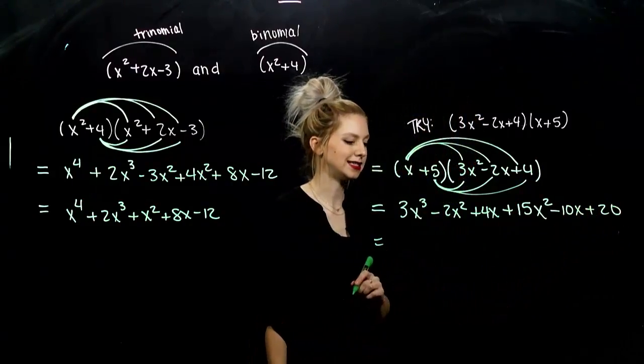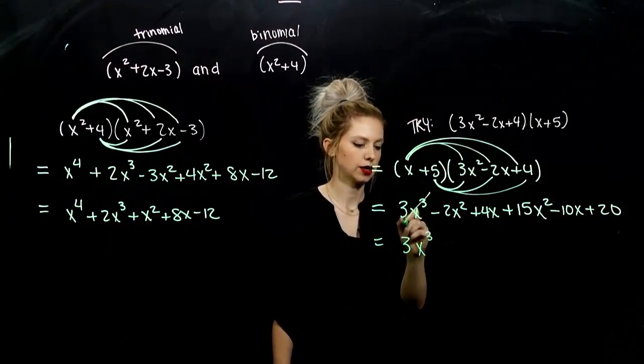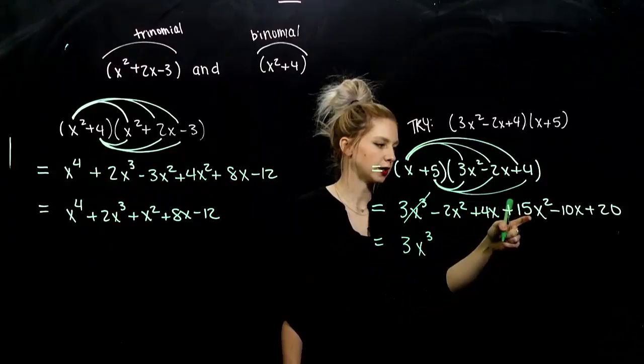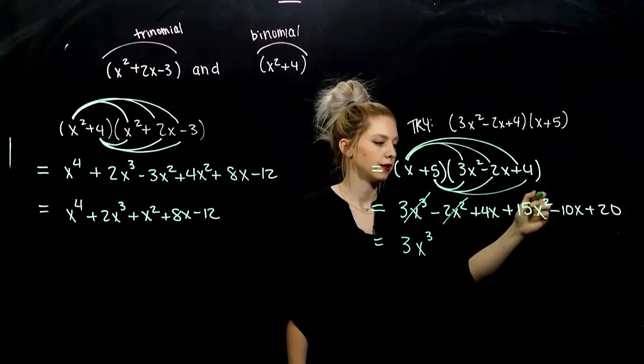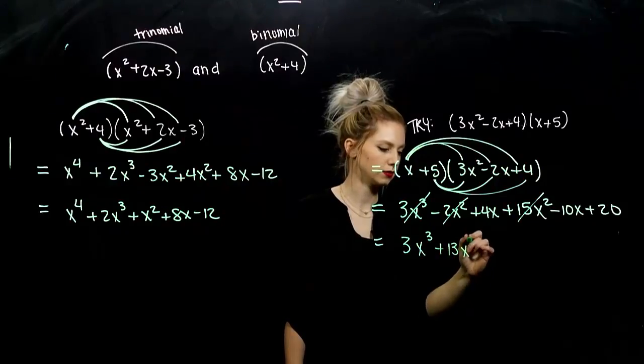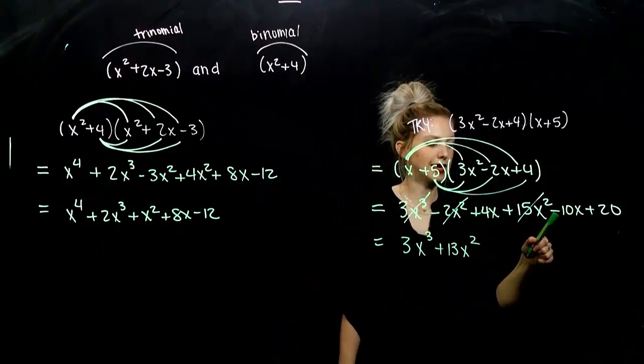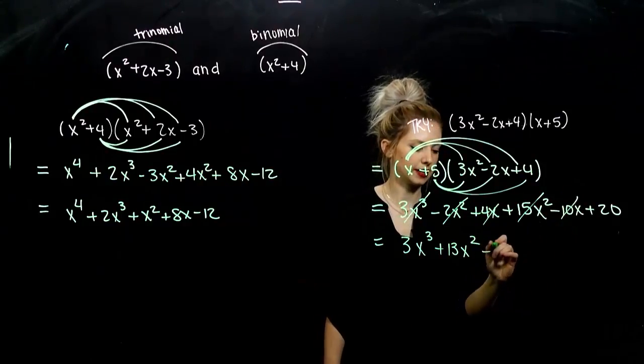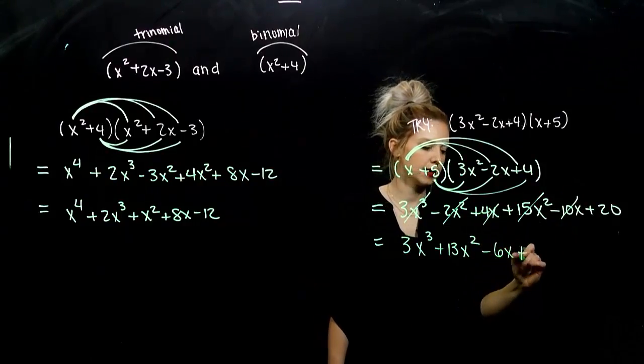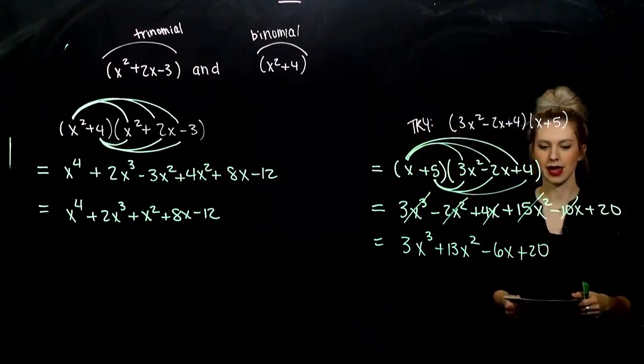We want to write in descending order. The largest thing I can see is 3x cubed. Take care of that one. How many factors of x squared am I going to have? I've got 15, and I'm taking away 2. So, I'll have 13 of those. How many factors of x? I've got negative 10, positive 4. So, that will give me negative 6x. And, 20 doesn't have any buddies to combine with in the end. Well, that's okay.